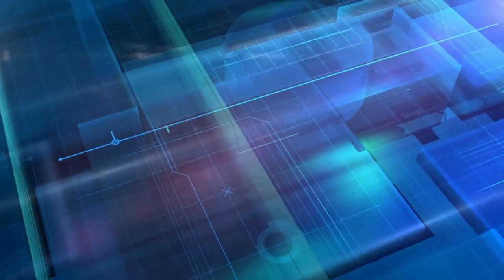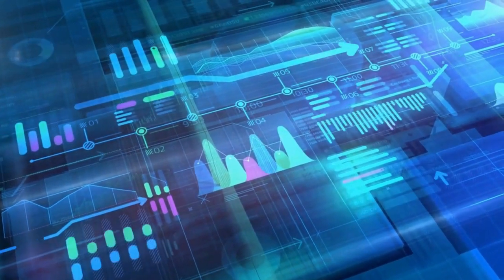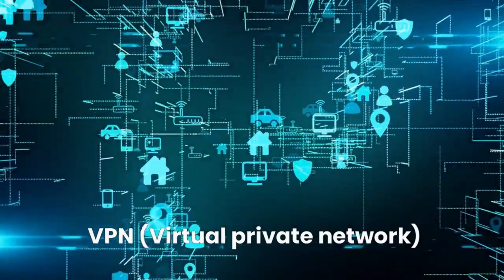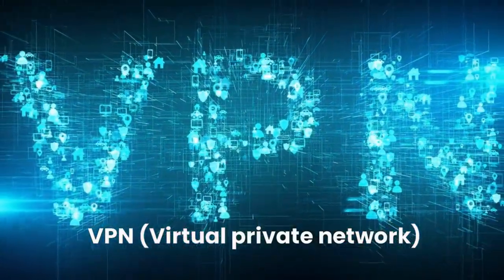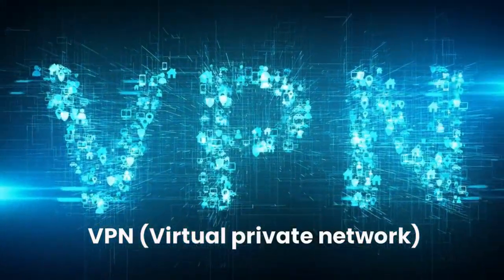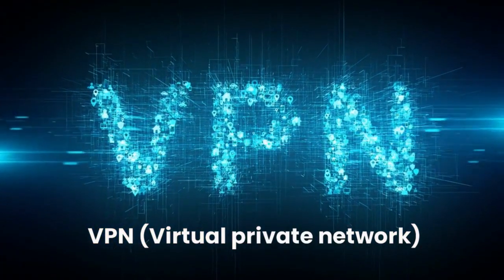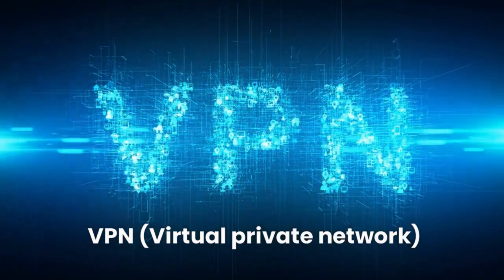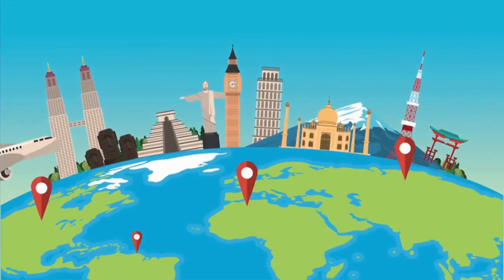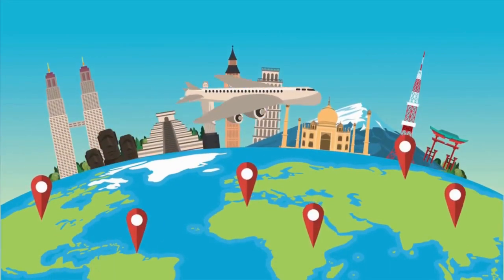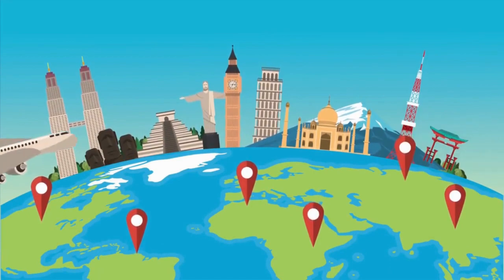It is used to store and retrieve data from storage devices. Virtual Private Network, VPN — a VPN is a type of network that allows users to connect to a private network over a public network, such as the internet. It provides secure and encrypted data communication, allowing users to access resources from remote locations.